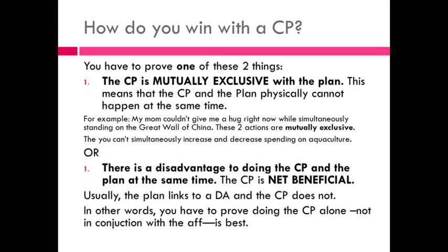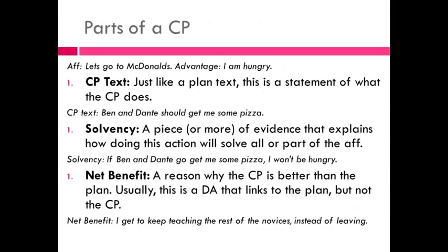To summarize: you have to prove the counter plan is mutually exclusive — either by proving it physically cannot be done at the same time as the plan, or by giving reasons why doing the plan and the counter plan together is a bad idea. And you also have to prove the counter plan is better than the plan, which is called the net benefit.